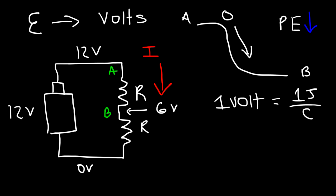Electric potential is the ratio of electric potential energy per unit charge, so one volt equals one joule per coulomb. When you think of voltage, it's really the energy change per one coulomb of charge. As current flows through a resistor, the resistor consumes energy, and so the electric potential of those charge particles decreases. What a battery does is increase the energy of the charges — it does work on them.